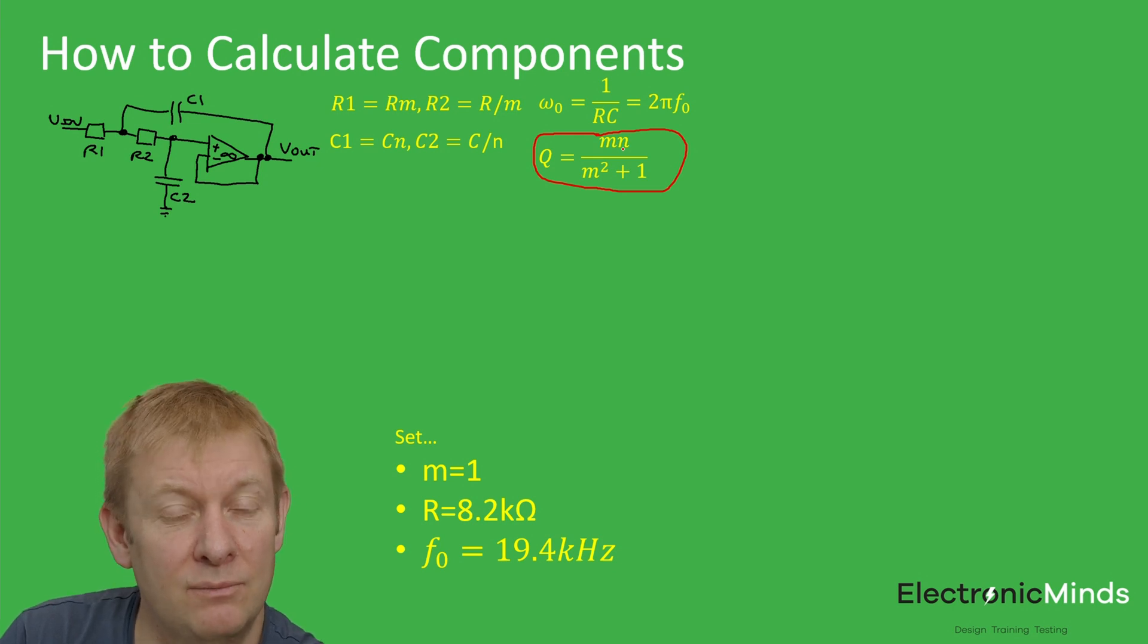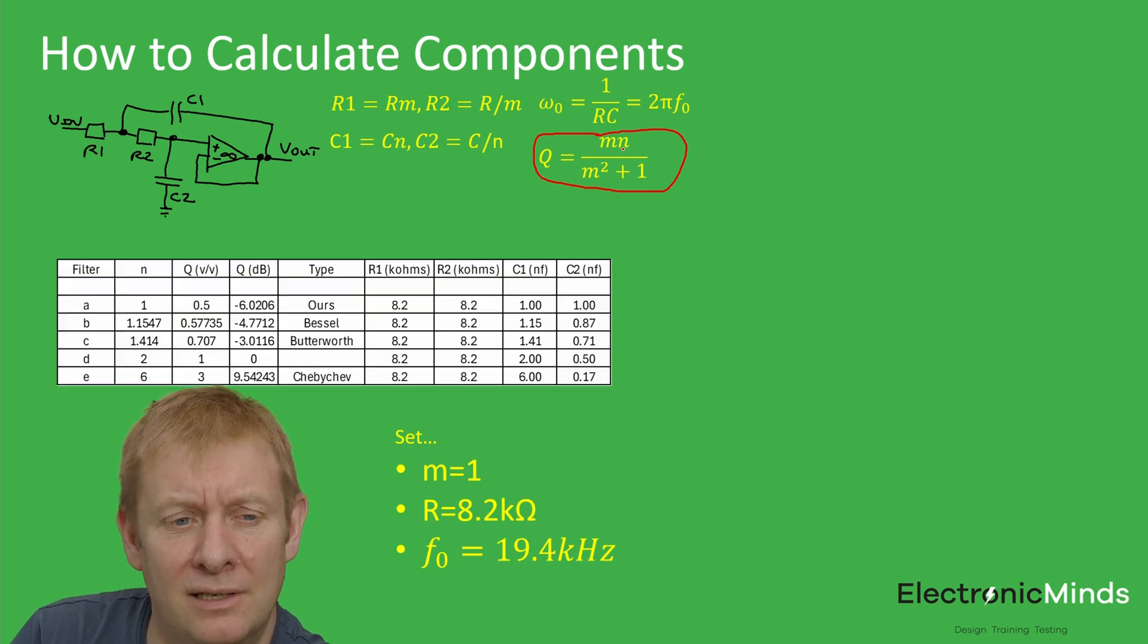We're also going to choose a resistor value of 8.2k. This is really just engineering judgment. If you set that resistor value too small, you'll burn more power in your filter, but if you set it too high, the effects of noise or input bias currents on the op-amp can cause problems. A few kilohms is typically where you want to start. Lastly, we're going for a corner frequency of 19.4 kilohertz, which is what the corner frequency is on the filter we built earlier.